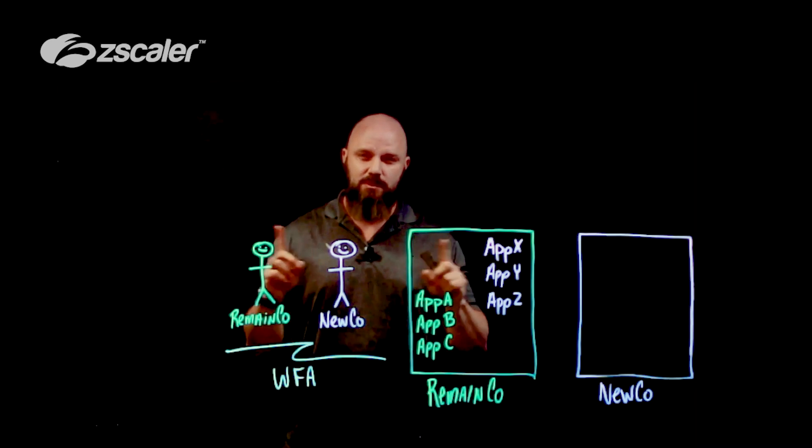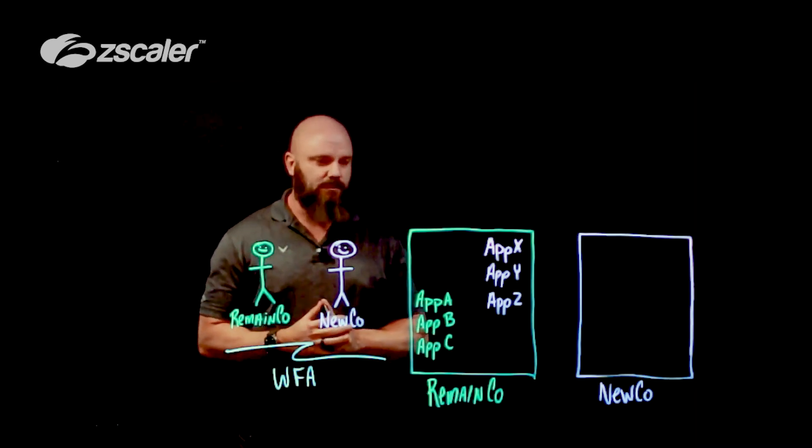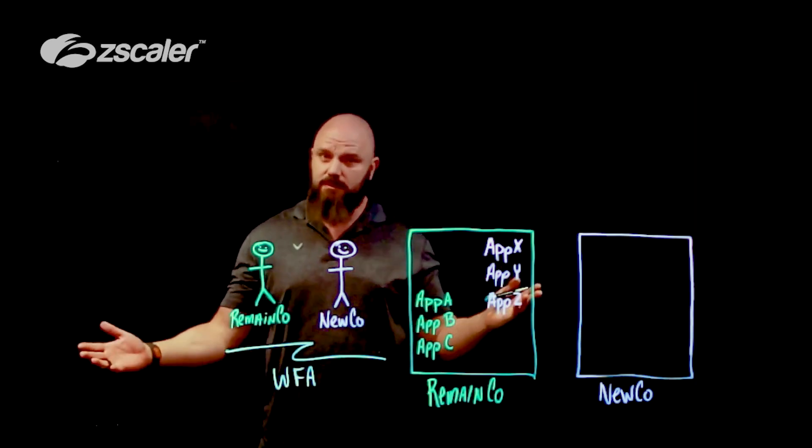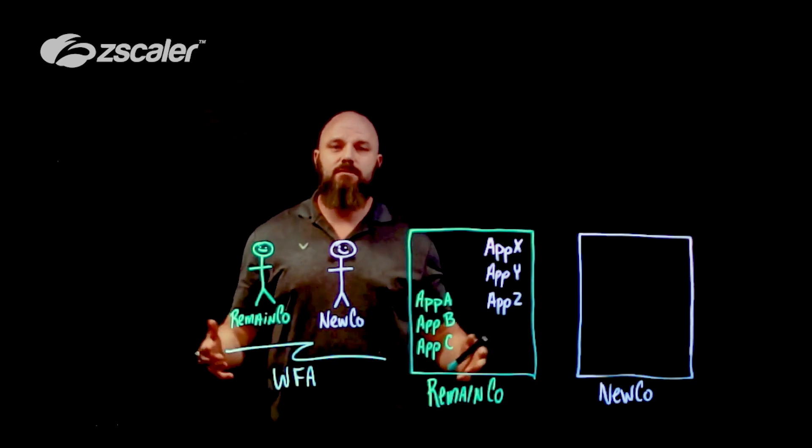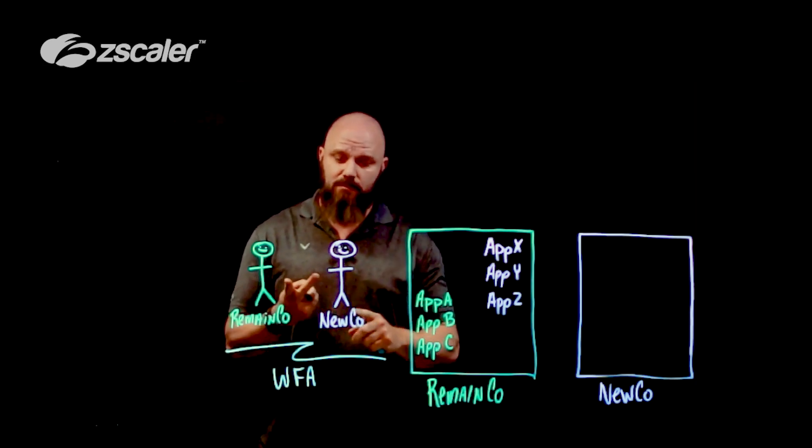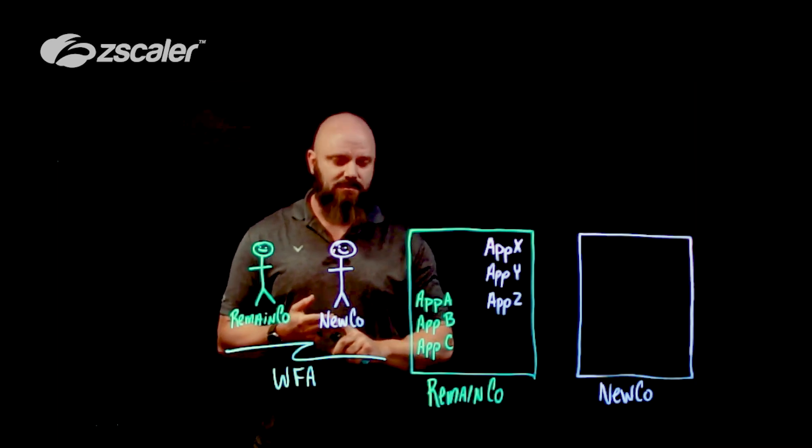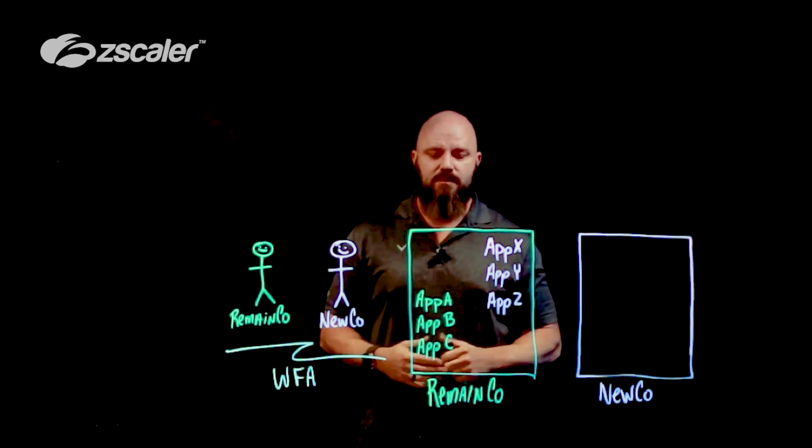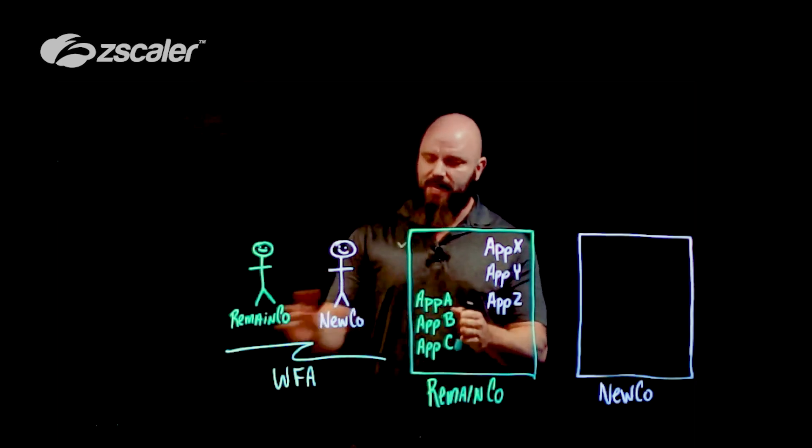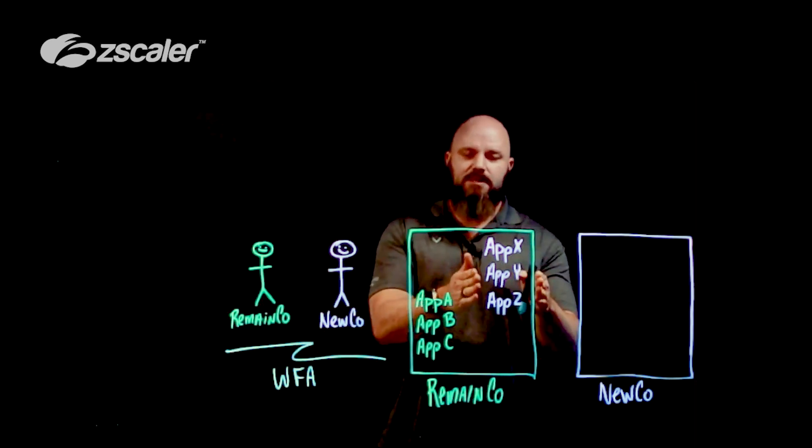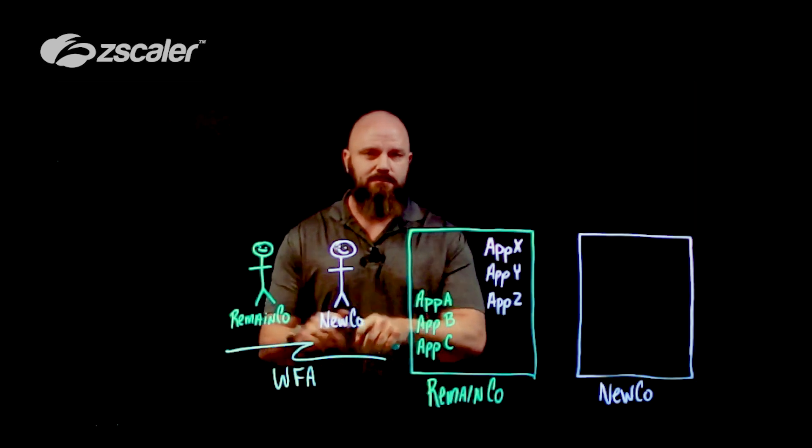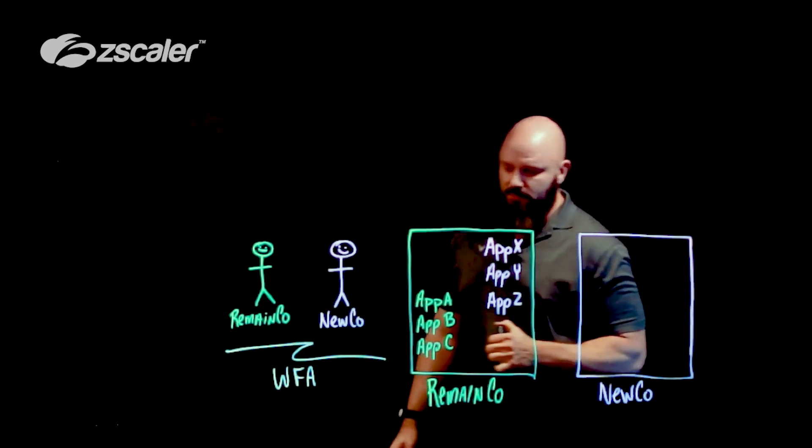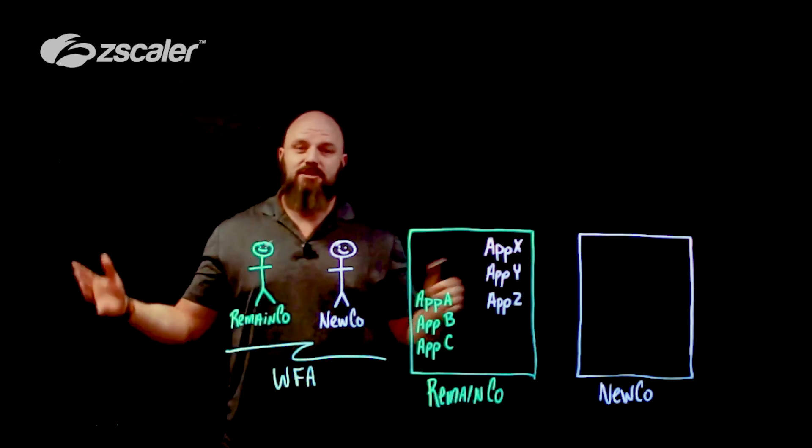All right, team. Before we jump into it, let's do a quick overview of what I already have illustrated right here. We have RemainCo. This is the company doing the divestiture. We have NuCo. That's the new company. And in both cases, these users are working from anywhere. That includes working from home, Starbucks, or even at the office. We shift over here a little bit. This is RemainCo's data center. This is where the applications all live. The green applications A, B, and C, these should only be accessed by RemainCo employees, whereas applications X, Y, and Z should only be accessed by NuCo. And at the end of the day, NuCo wants to eventually be able to take these applications and to move them into their own data center. So let's jump into what this actually looks like.